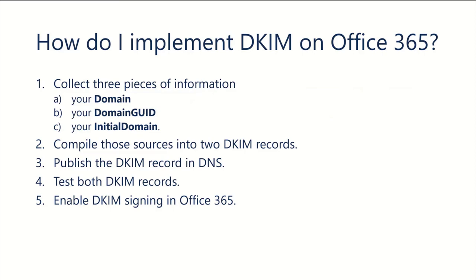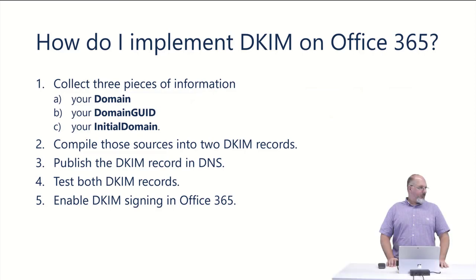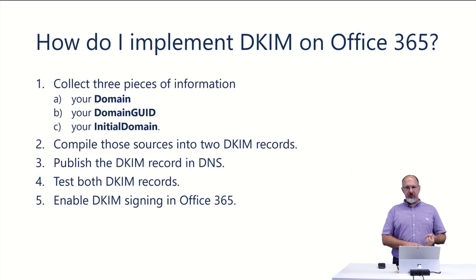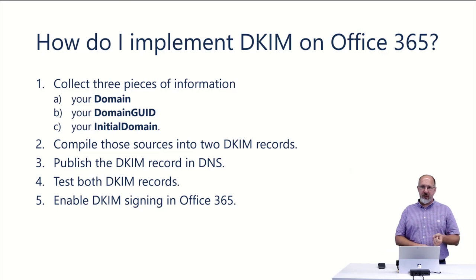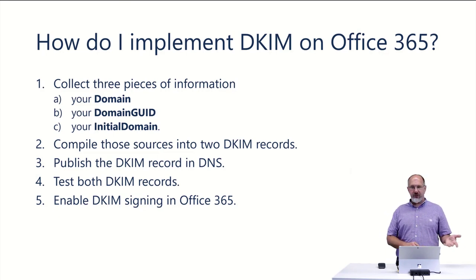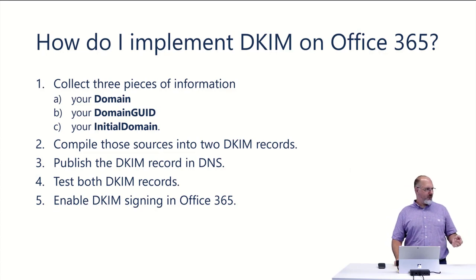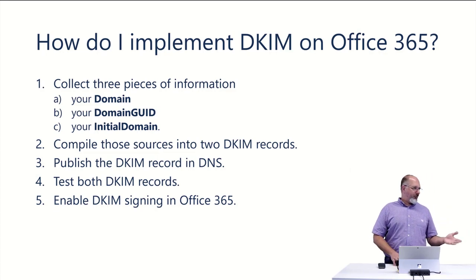Implementing DKIM on Office 365 is pretty simple. There are essentially five steps, which I'll discuss in detail in a minute. First, we have to collect a little bit of information about the domain that we're going to be using. This is all information that we can discover in our Office 365 tenant or by using tools to check different records in DNS.